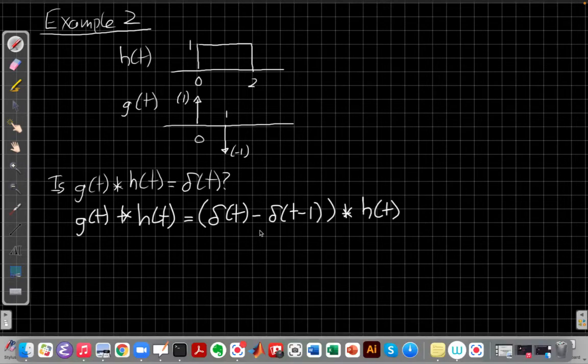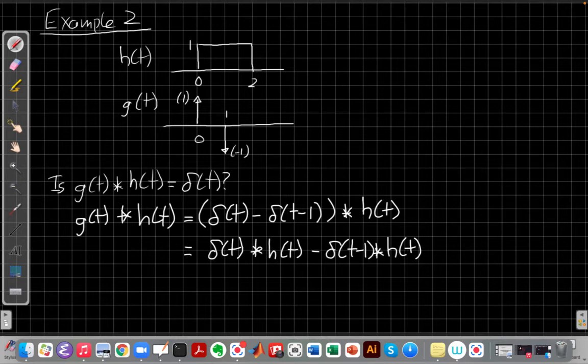And after I do this, I can then use the distributive property to write this as two different convolutions. So that gives me delta(t) convolved with h(t) minus delta(t minus one) convolved with h(t).